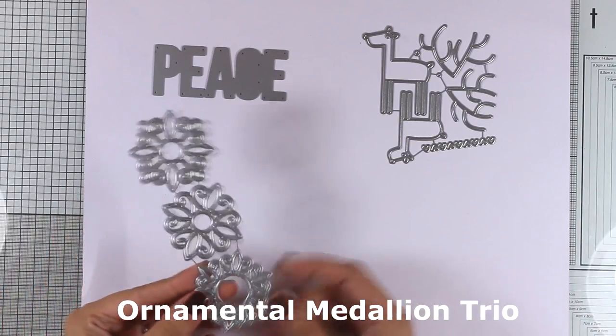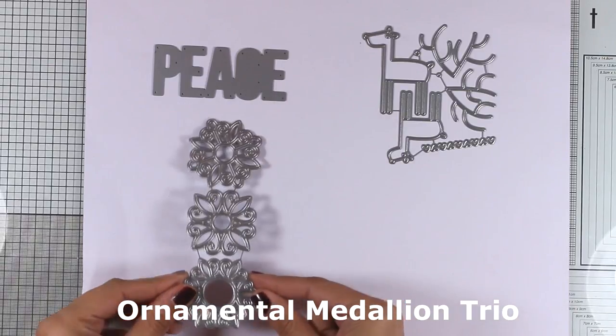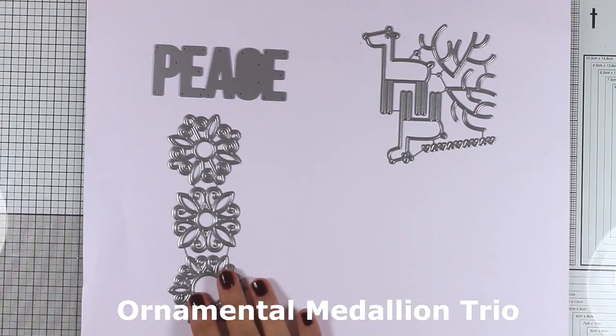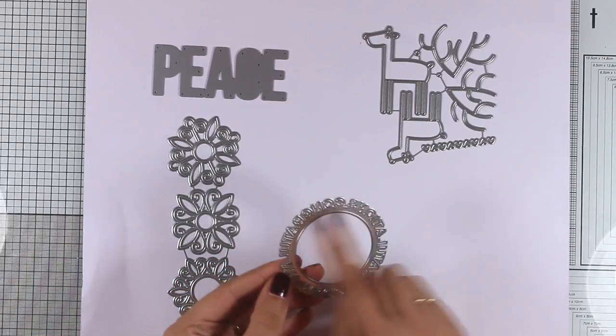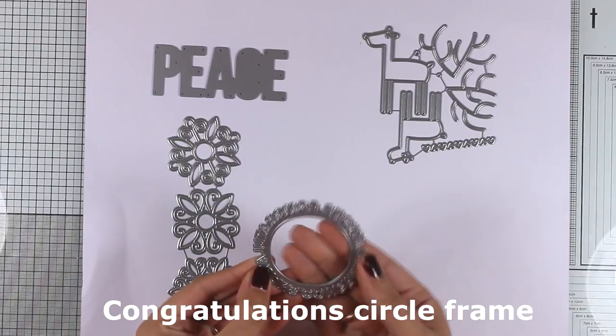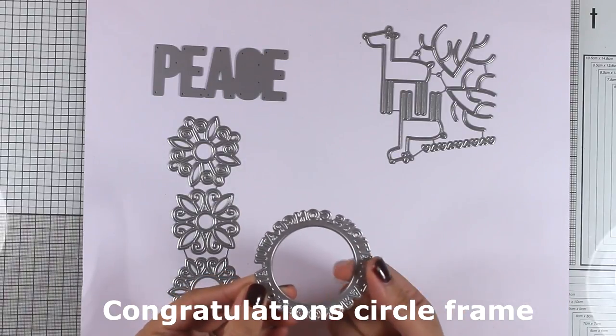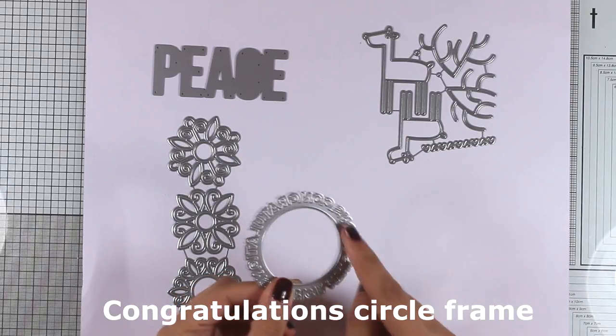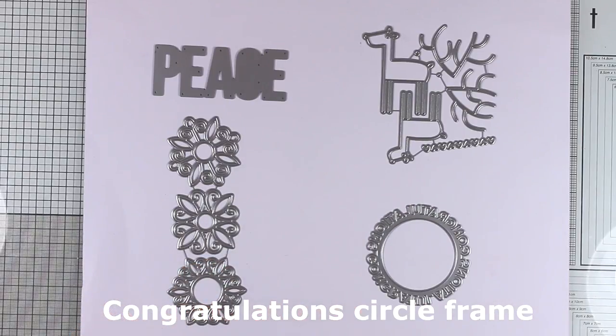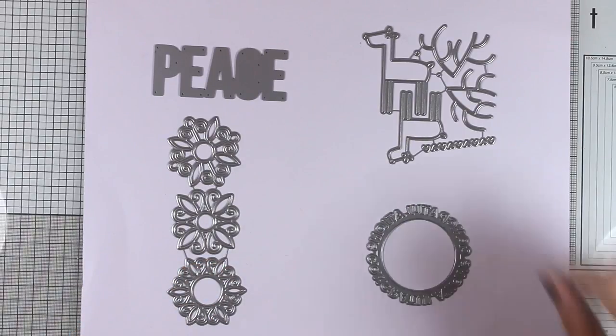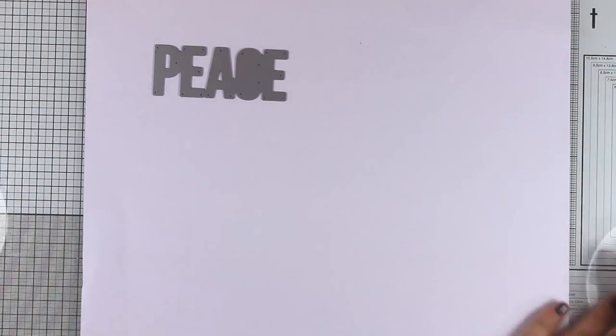This is the Ornamental Medallion Trio. You get three different designs on these medallions, and they make beautiful focal points. This is the Congratulations Circle Frame. This matches with those pouches for creating shaker cards. It has the word congratulations all around, and it's actually the free with 60 for this month.